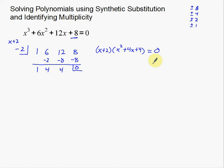That's why we use synthetic substitution — because factoring by grouping just wasn't working. I tried plugging in positive 2 and it didn't work, then negative 2 did work, which tells me x plus 2 is one of my factors. Now I need to factor x squared plus 4x plus 4, and this is actually manageable — I can do that in my head.